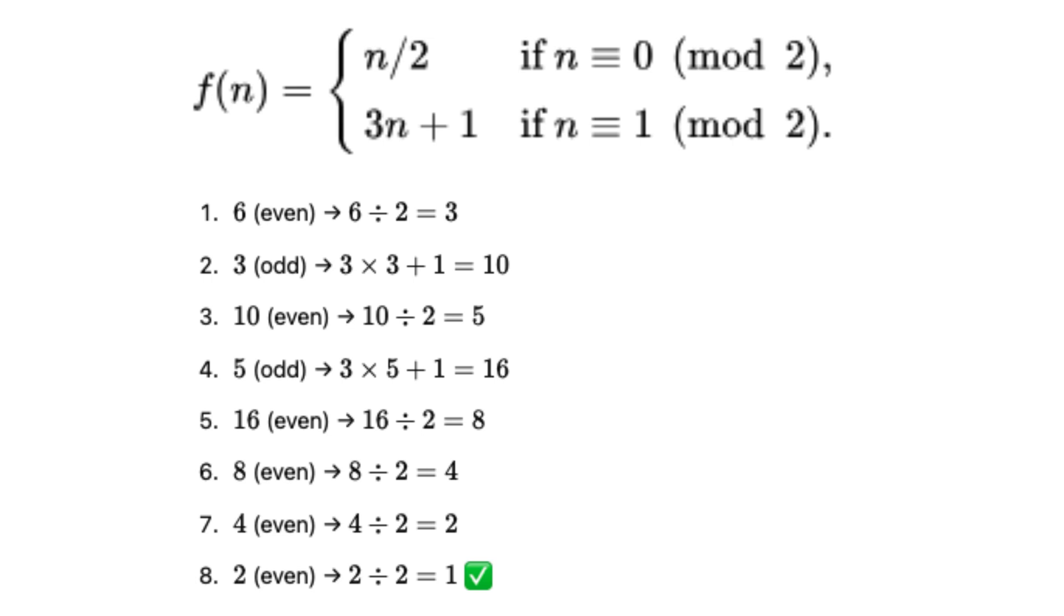The sequence generated by applying these rules is called the Collatz sequence. For example, starting with 6, this sequence bounces like a mathematical yo-yo: 6, 3, 10, 5, 16, 8, 4, 2, 1. While this sequence is relatively short, others can be surprisingly long.